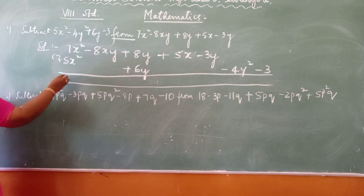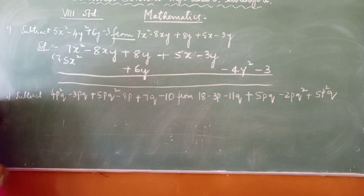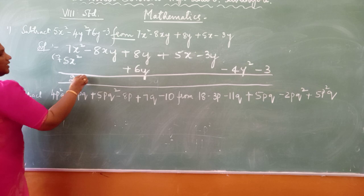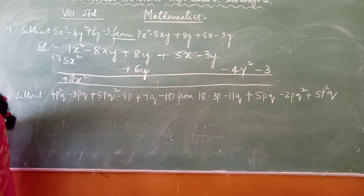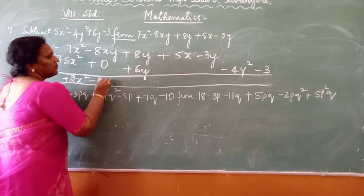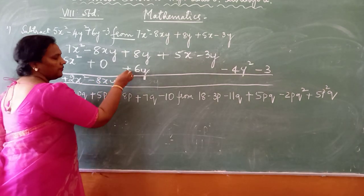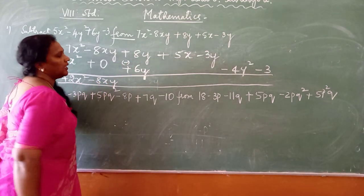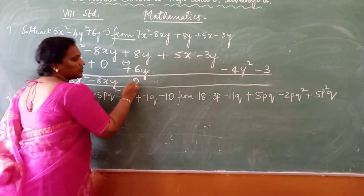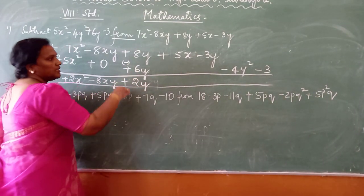7 minus 5 - see, this is plus and this is minus. Different signs, you are supposed to subtract. It is 2x's part. Greater number sign is plus. If there is nothing, what have I told you to put? 0. It is minus 8xy. If it is plus, what you have to do? Minus. Different signs, you have to subtract. 8 minus 6 is 2y. Greater number sign is plus.